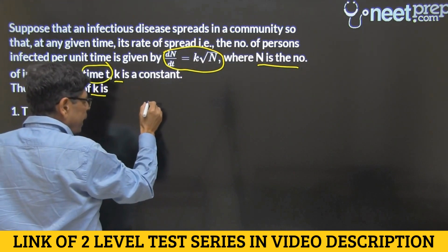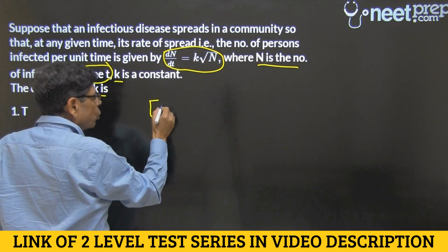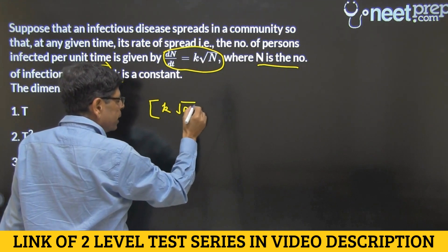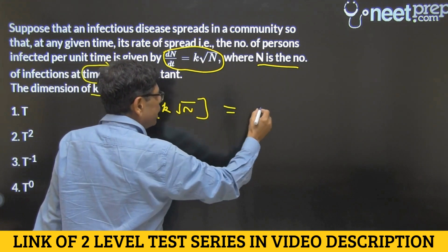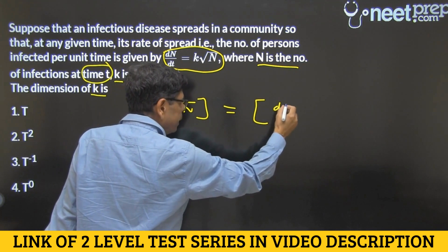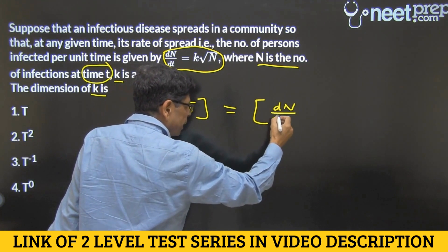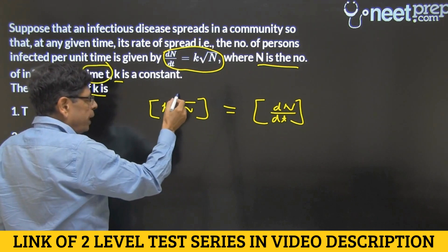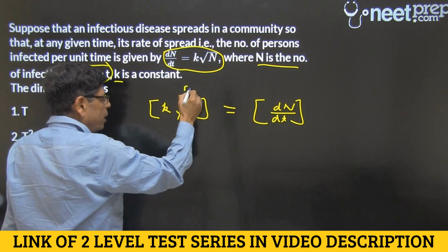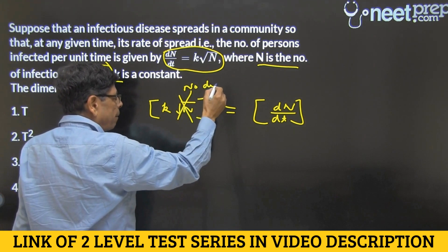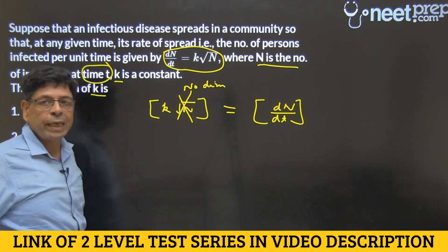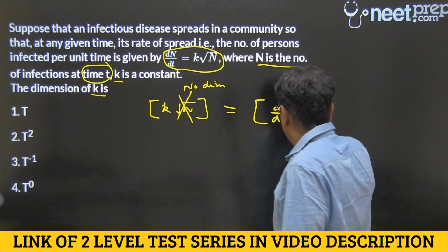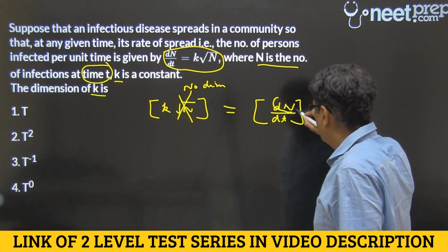I'm writing the LHS first. The dimensions of K times root n would be the same as the dimensions of dn by dt. Now, root n has no dimensions, because n itself has no dimension.